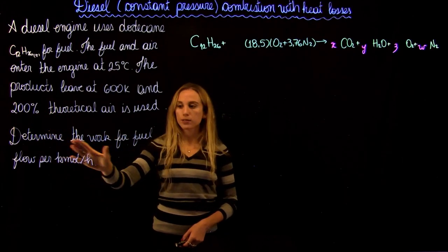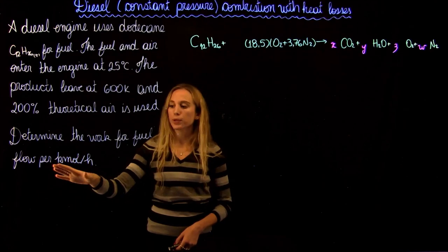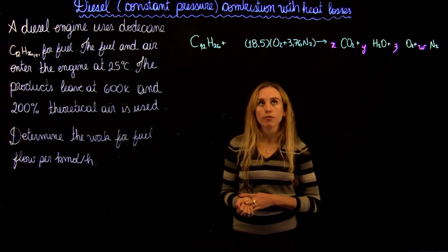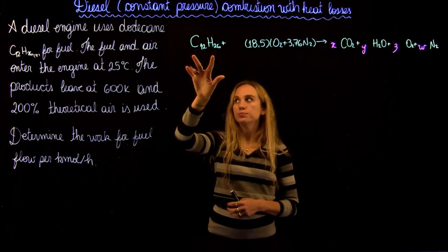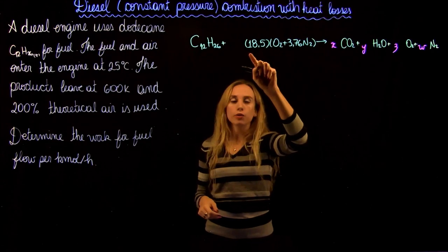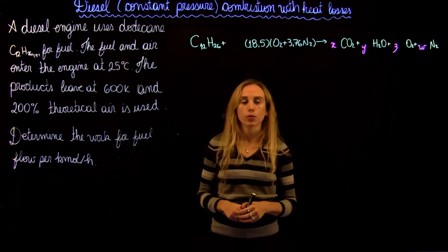We are asked to determine the work for the fuel flow per kmol per hour. In the previous video, we have found that if we have fuel and air, we have to find the amount of theoretical air. And we found 18.5 in the last equation.